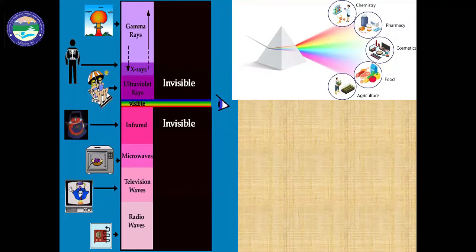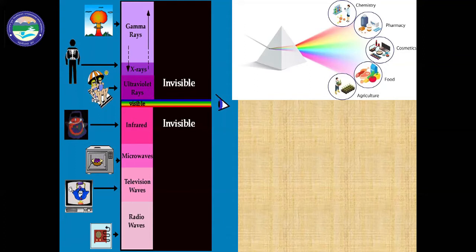When dealing with spectroscopy, light plays a huge role. The light we can get free of cost is sunlight, so the sun is our source of light. The sun is a source of all types of light: gamma rays, X-rays, ultraviolet rays, visible rays, infrared, microwave, television waves, and radio waves. These are all different kinds of light which generally come from the sun to us.